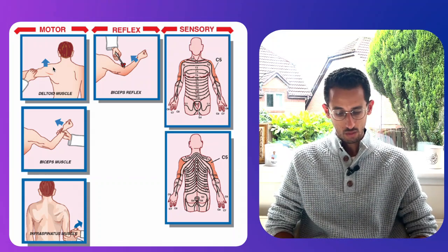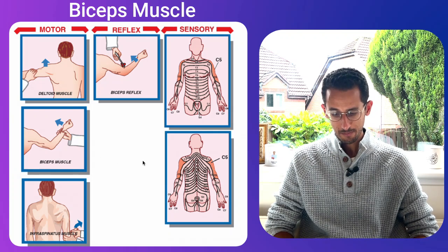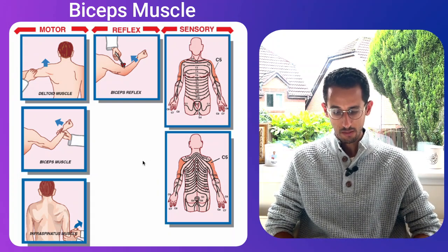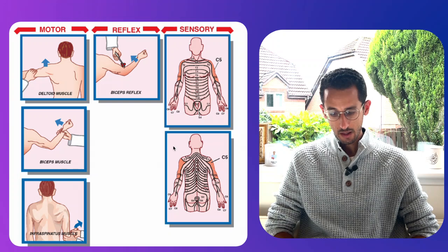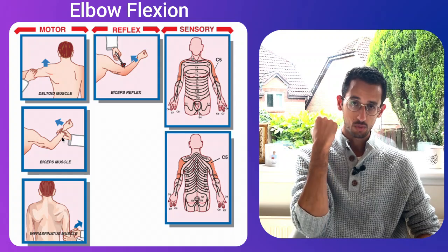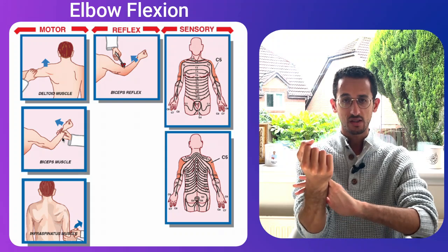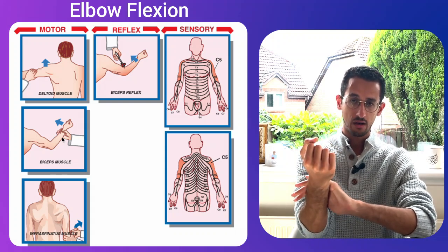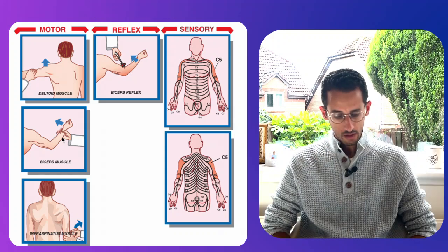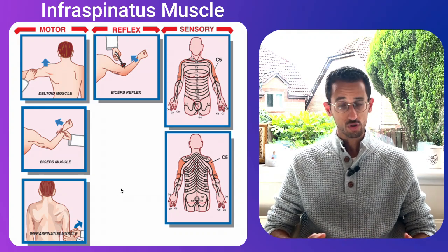The second muscle to look at is the biceps. The biceps muscle is supplied by both C5 and C6 and is innervated by the musculocutaneous nerve. The main action of the biceps muscle is elbow flexion. You ask the patient to keep their arm in position and then flex their elbow against your resistance, checking the action of the muscle.